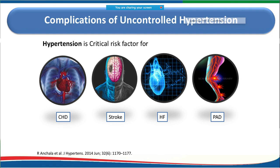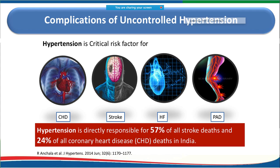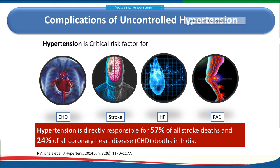Common complications associated with hypertension include coronary disease, stroke, heart failure, and peripheral artery disease. Hypertension is directly responsible for almost 60% of stroke deaths and nearly one-fourth of coronary heart disease.